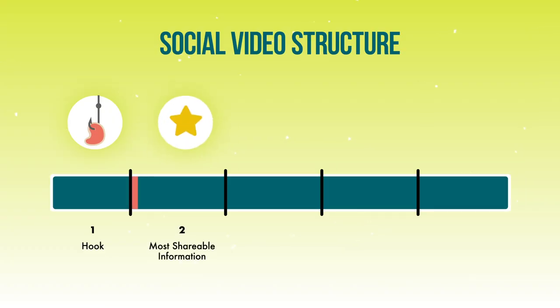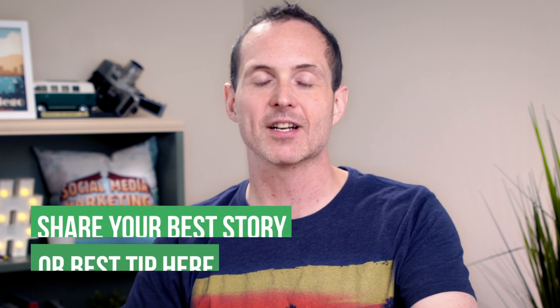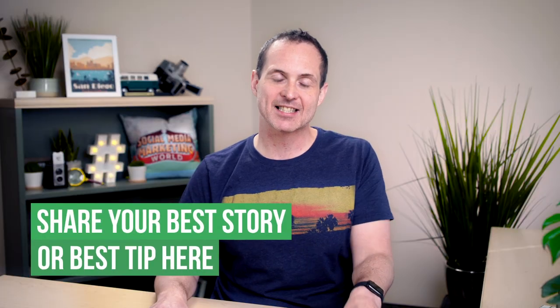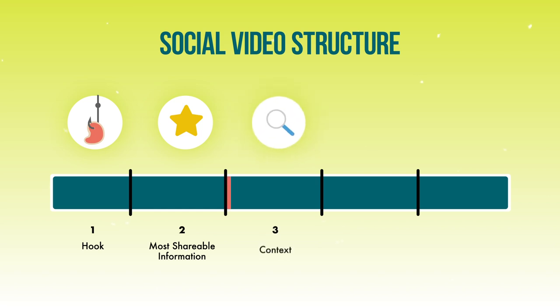Then, front-load. The first thing there is the most shareable piece of information. So whatever you're talking about — whether it's a story about an event or some sort of tip or trick — you don't want to save the best. Instead, take the most shareable piece of information and put it as the second slide.